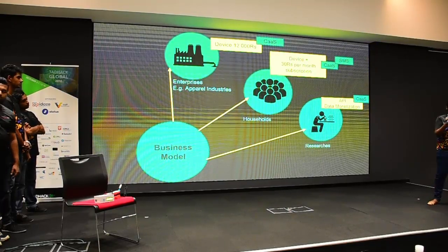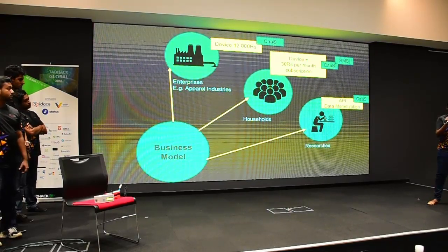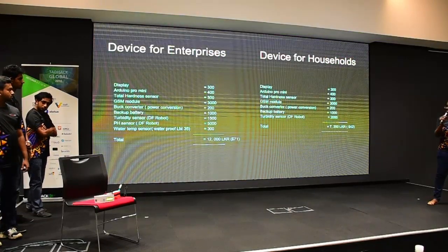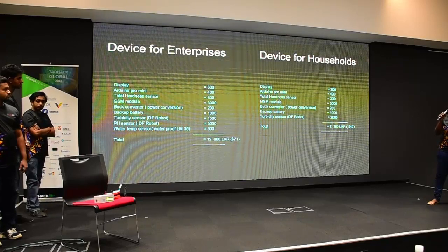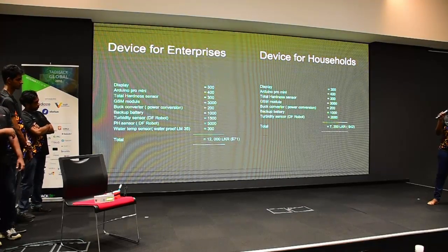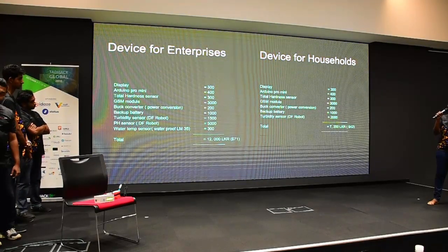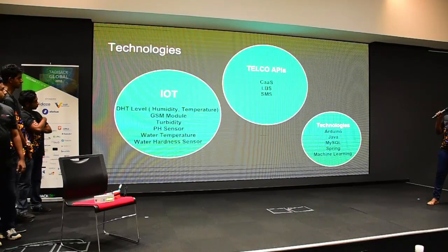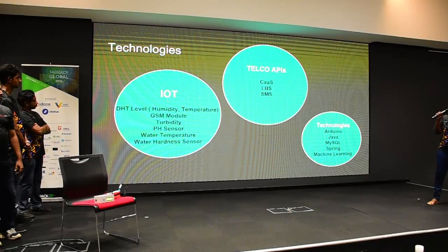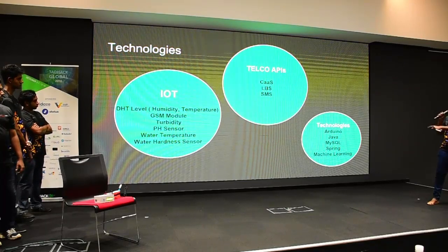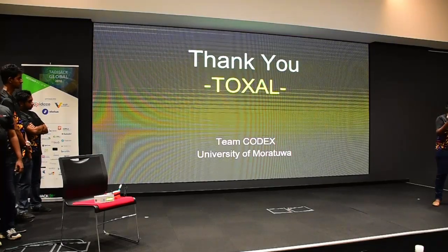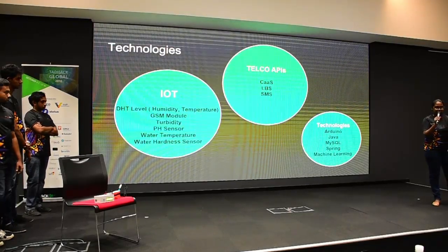With time, we will improve the quality of our data by establishing this device in many locations, increasing data value and enabling data monetisation. Here is the device we are introducing for enterprises and for households. For the APIs we are using SIGHAS, LBS, and SMS APIs, along with the corresponding technologies. In further implementation, we will be introducing machine learning to predict the toxic flow of water. Thank you.